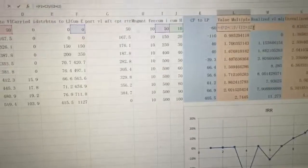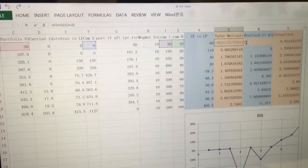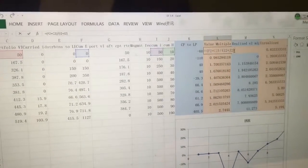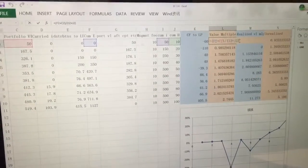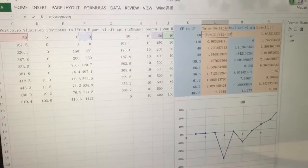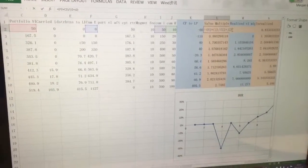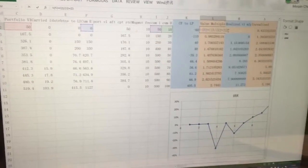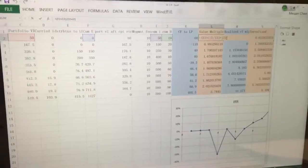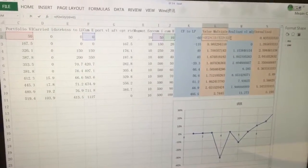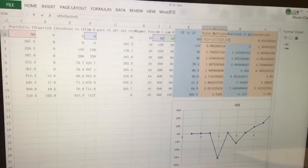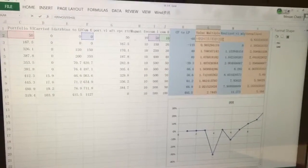For the last question 3.4, we did a calculation through a spreadsheet. For value multiple, we use portfolio value plus cumulative distribution to LPs as the numerator and divided by cumulative investment plus cumulative management.